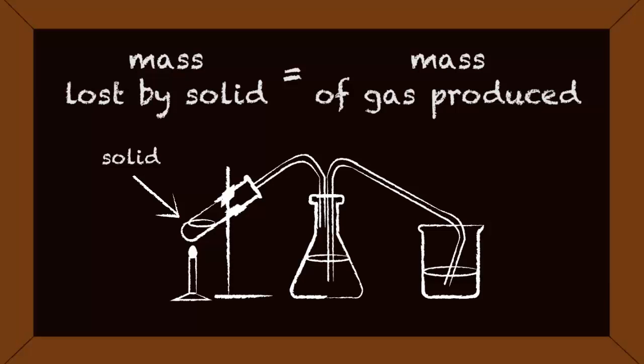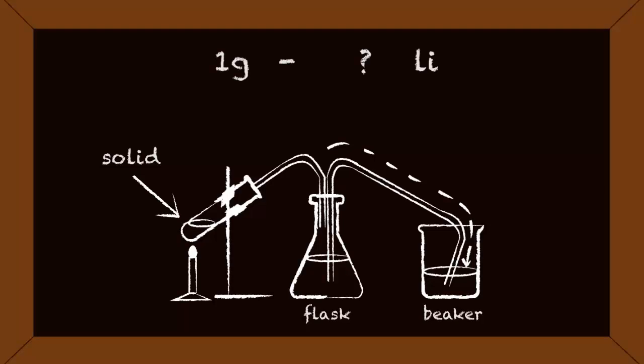You can measure the volume of the gas produced by how much water is displaced from the flask into the beaker. How might you work out the volume for 1 gram of oxygen if you knew that 0.83 grams of oxygen produced 0.625 liters of oxygen from this type of experiment? Pause, calculate and continue when ready.